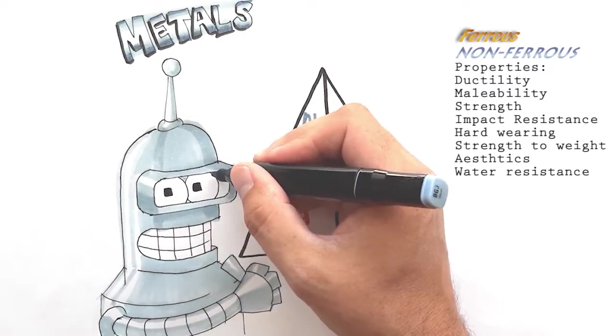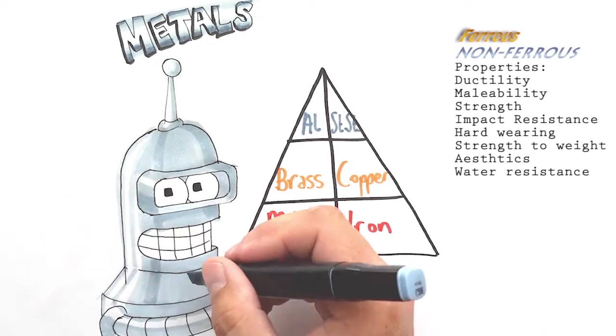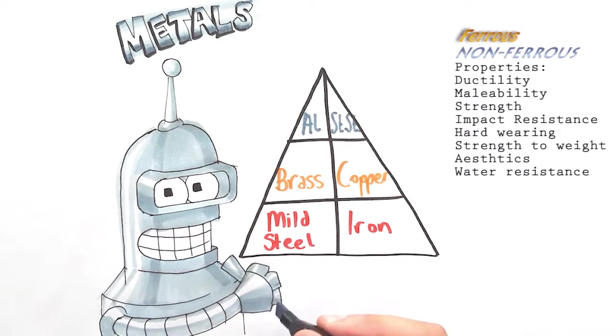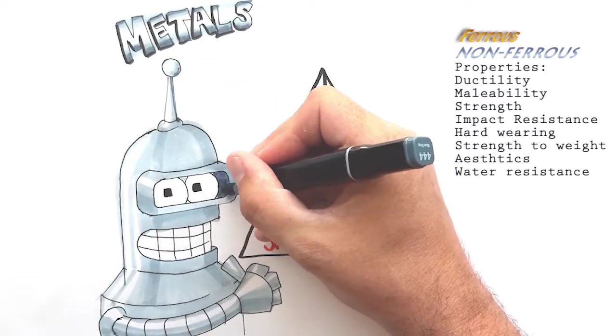Strength to weight means how strong is the metal compared to how heavy the metal is. So for example a metal such as aluminium is very very lightweight but is considered to be very strong.